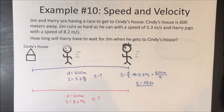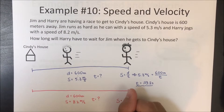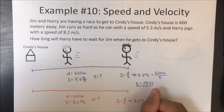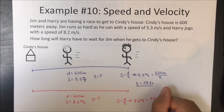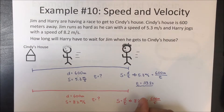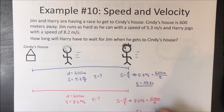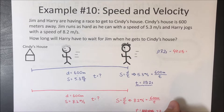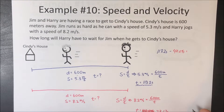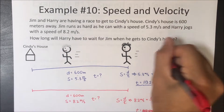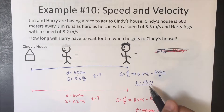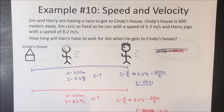For Harry, we do the same thing: speed equals distance over time. Harry's speed is 8.2 meters per second, distance is 600 meters, so solving for time gives us 73.17 seconds. We know it took Jim 113.2 seconds and Harry 73.17 seconds, so we subtract to find how long Harry is waiting.